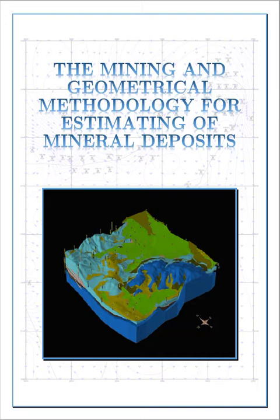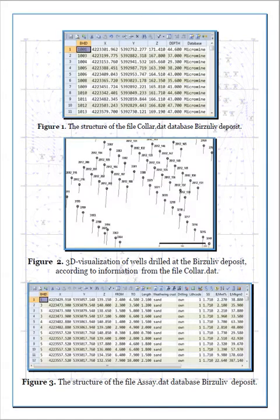Geometrization for the purpose of calculating mineral reserves can be carried out using geo-information systems. Consider the Micromine geo-information system. As an example of deposit geometry, we take the results of calculating the balance reserves of the Ilmenite Berzoloff deposit in the program, using the block modeling method, which is one of the most modern and objective methods of estimating resources and reserves of minerals used worldwide.